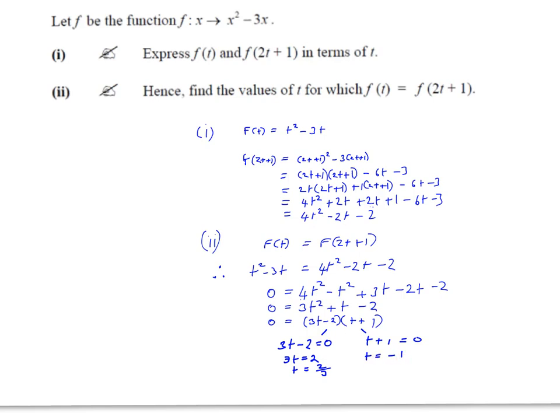So we've solved this equation, we've got two values for t. See here it says find the values of t, so we know we need to get more than 1. And that's what we do. Basically we substitute in for f(t) and f(2t+1), then we simplify until we have everything on one side, and then we do our quadratic factorizing, finally splitting the factors apart and then getting the values, the two values of t.